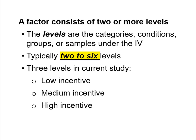By definition, a factor consists of two or more levels. Levels are the categories, conditions, groups, or samples under the independent variable. In a typical ANOVA investigation, we usually have two to six levels. In the current study there are three levels: the low incentive condition, the medium incentive condition, and the high incentive condition. When you hear the word level, think of it as pretty much the same thing as treatment condition.